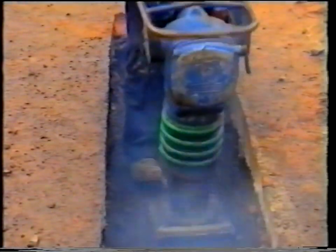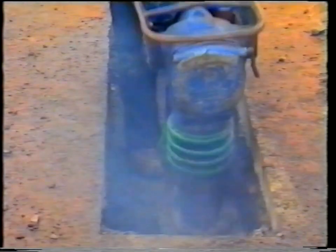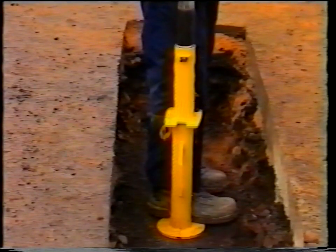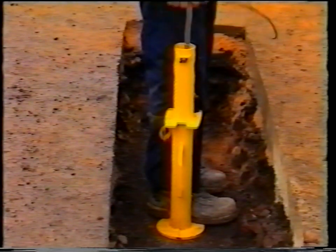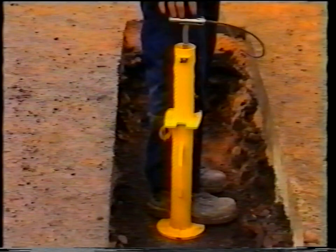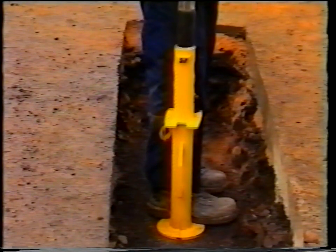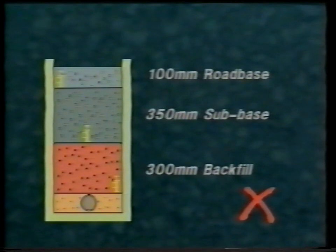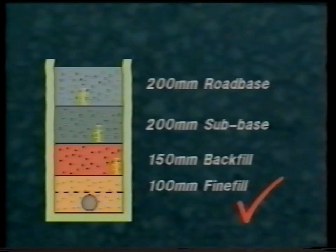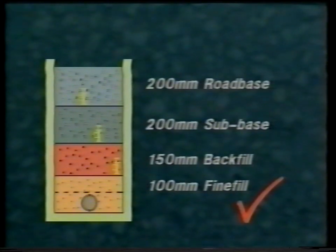An inherent limitation in most methods of compaction assessment is that the measurement relates mainly to materials within 200 to 250 mm of the surface that is being tested. It is therefore not possible to monitor the state of compaction of the lower layers of the completed reinstatement directly from the road base. Layer thickness can disguise poor compaction at depth, and therefore periodic checking on top of each layer, or at appropriate increments of up to 200 mm whichever is the smaller, is recommended during the reinstatement operation.